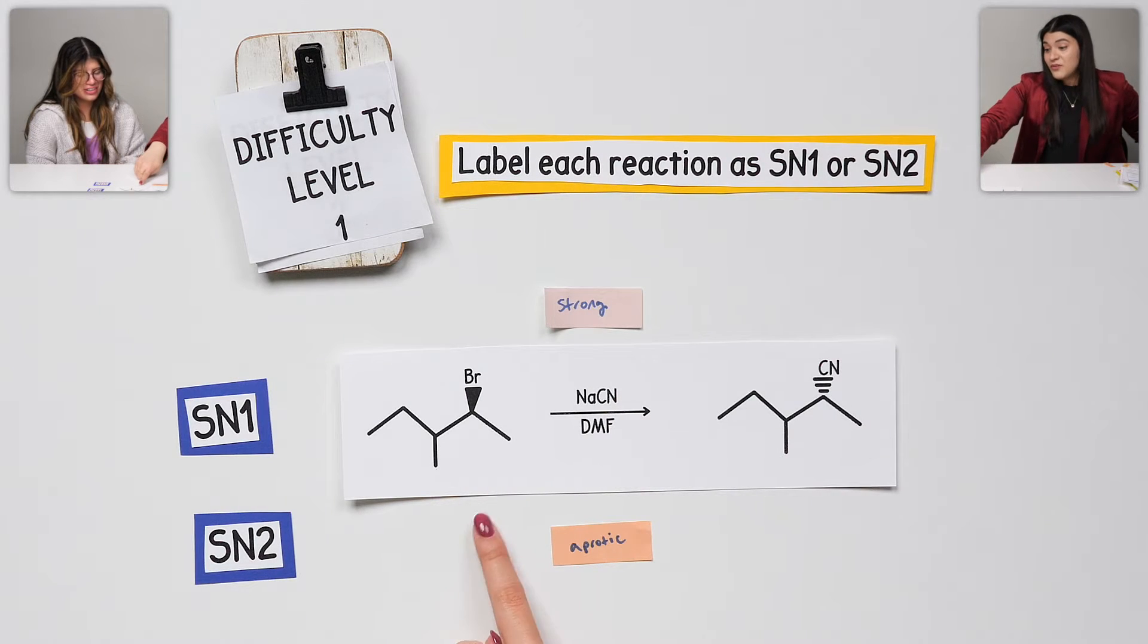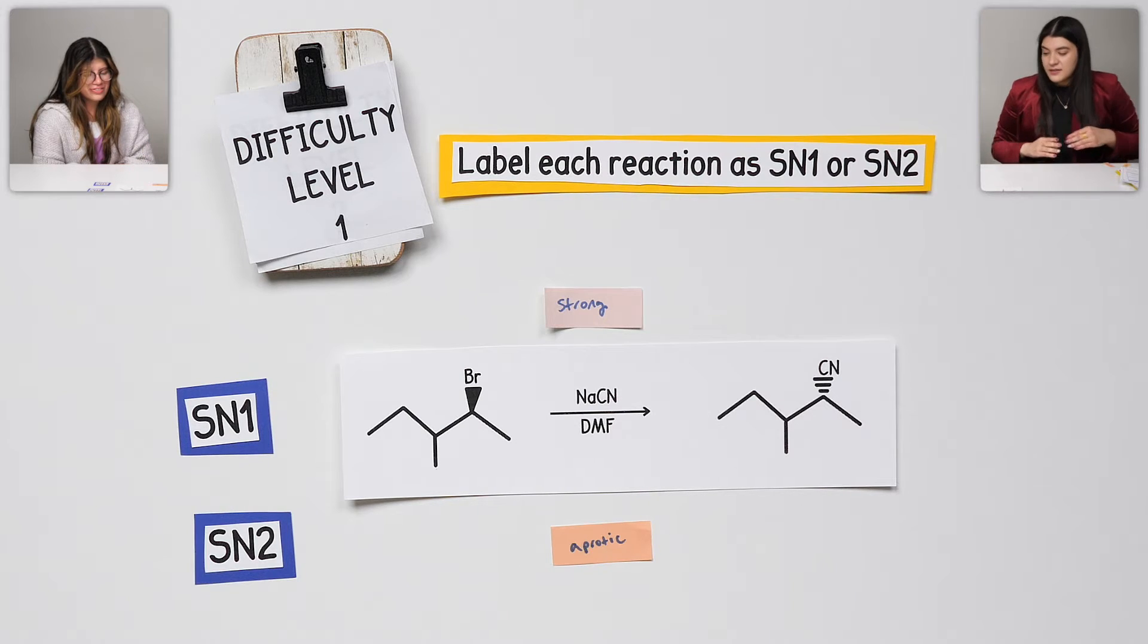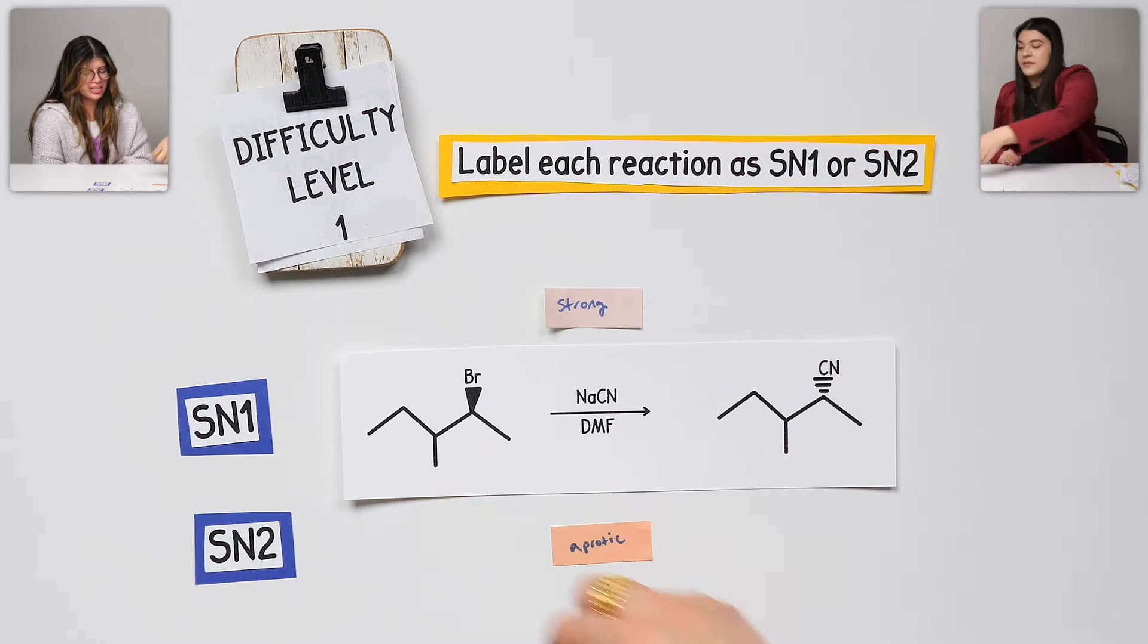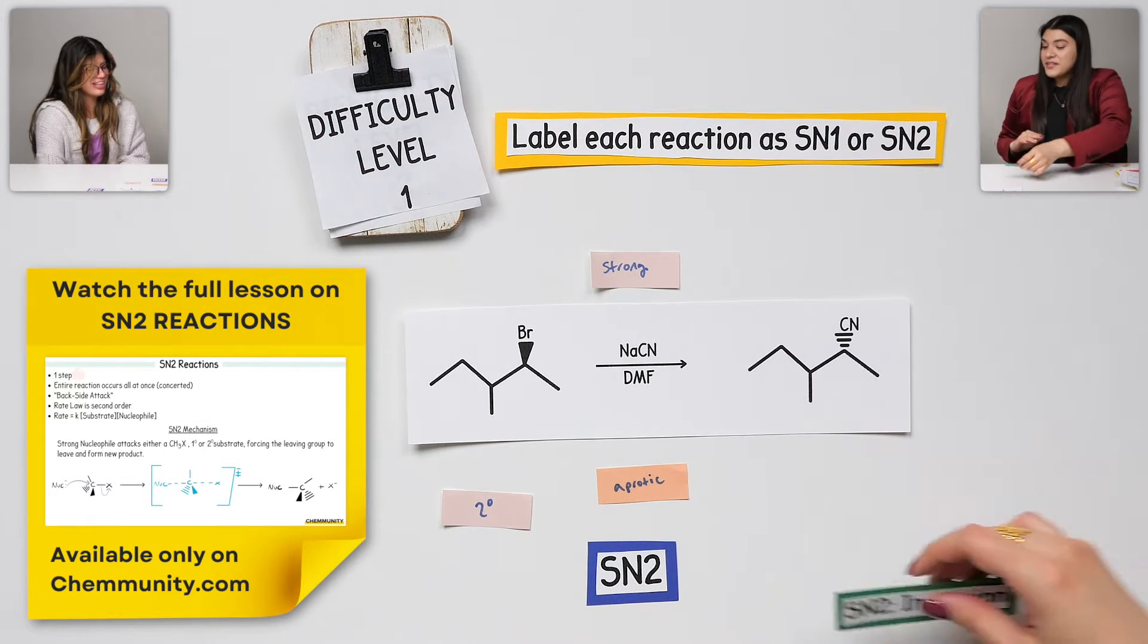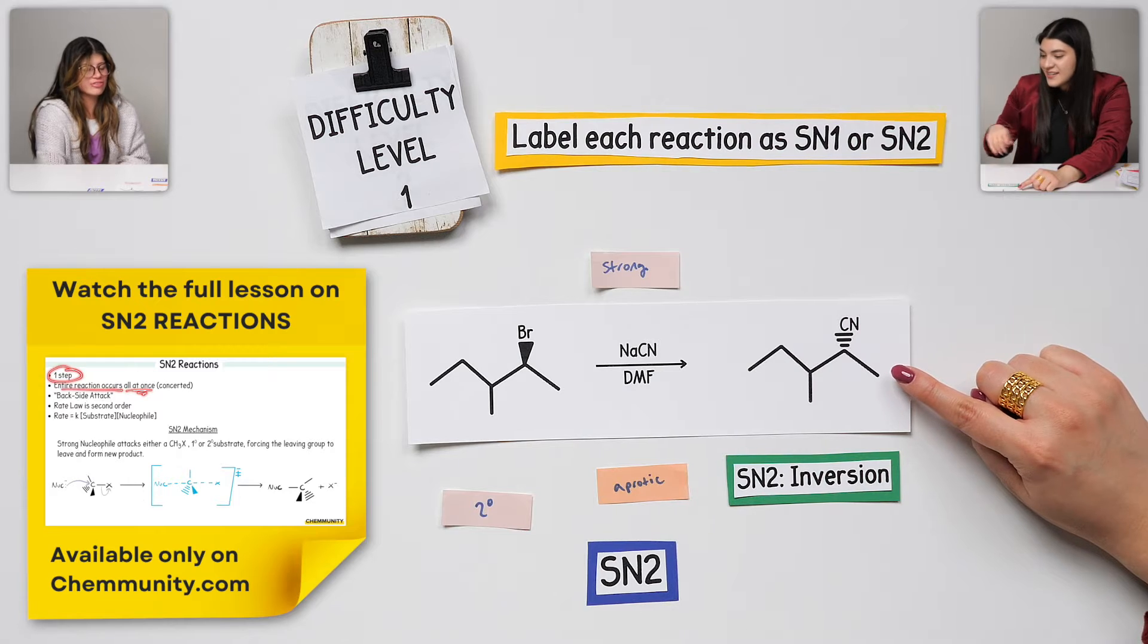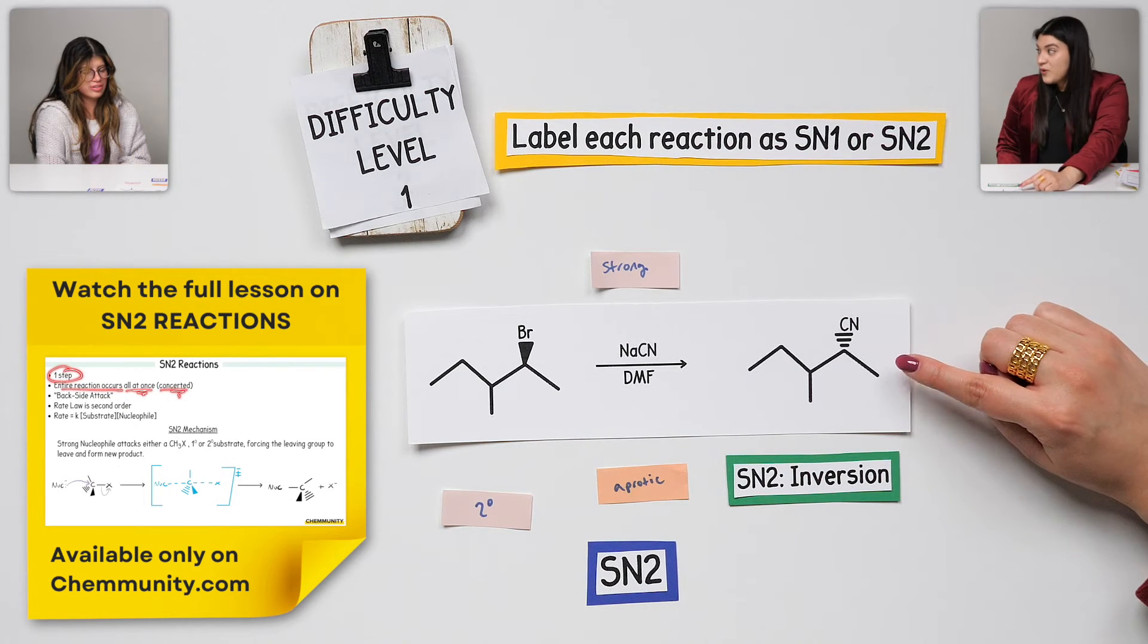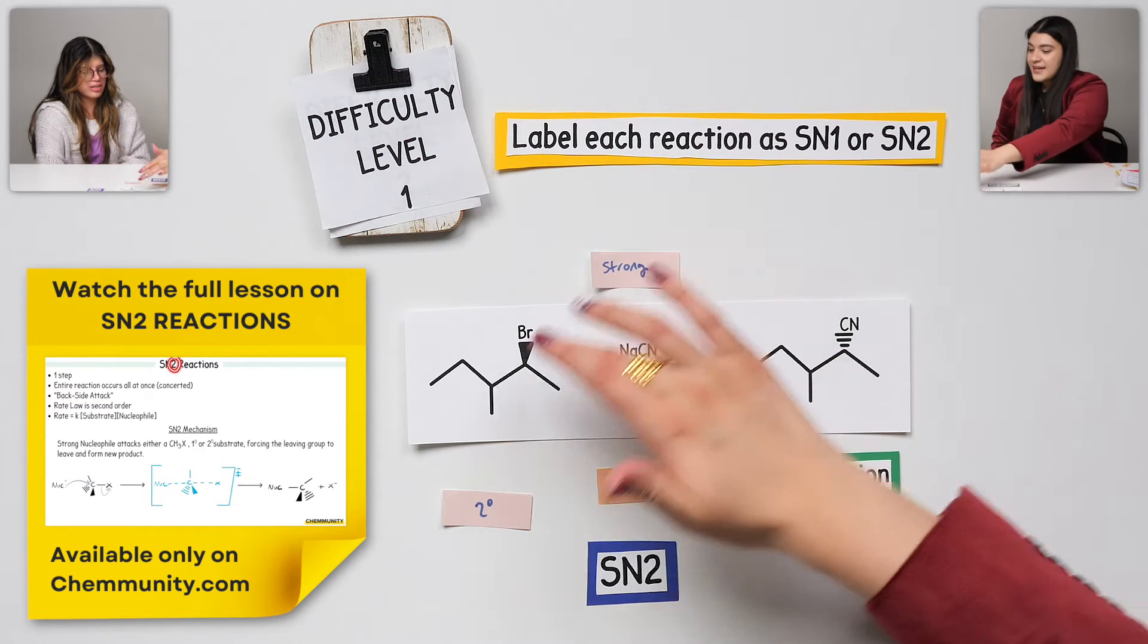And then also, we could have looked at the alkyl halide. How would you classify that? That one would be secondary. Perfect. Label it. SN2. Beautiful. I'm also going to mention one thing. We could have noticed because we are given the product, there's inversion. There's only one product here because this is SN2, right? That backside attack.